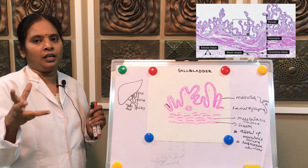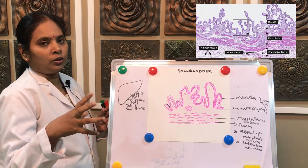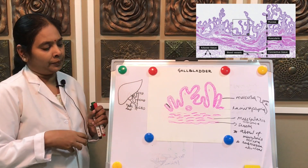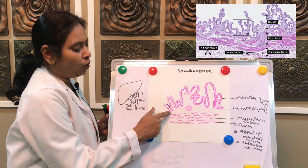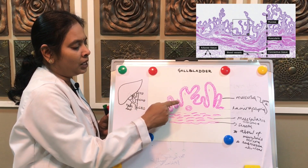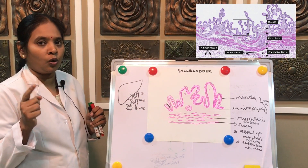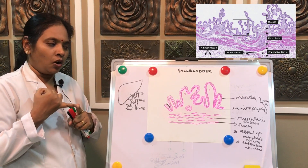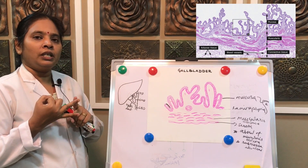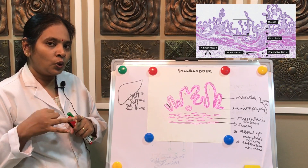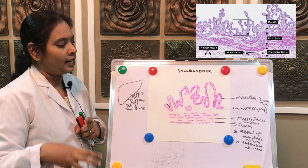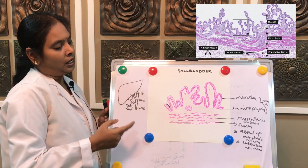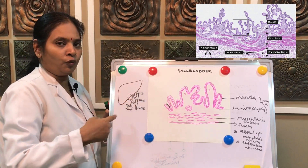The irregular folds give rise to a honeycomb appearance. An important point: there are no goblet cells in the gallbladder mucosa — only simple columnar cells. The mucosa is thrown into folds giving a honeycomb appearance. Clinically, sometimes these mucosal folds are even deeply formed and may occupy the muscularis layer.